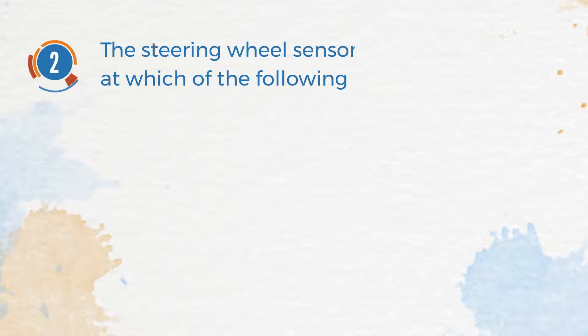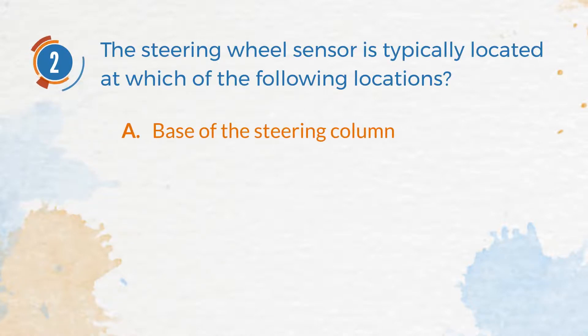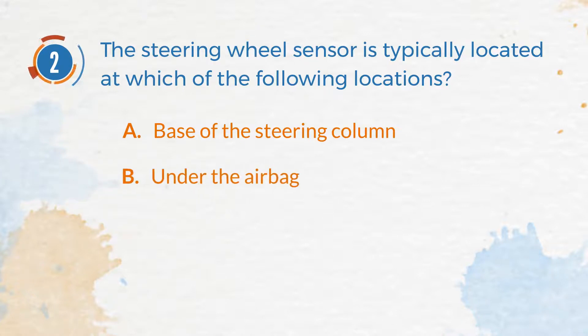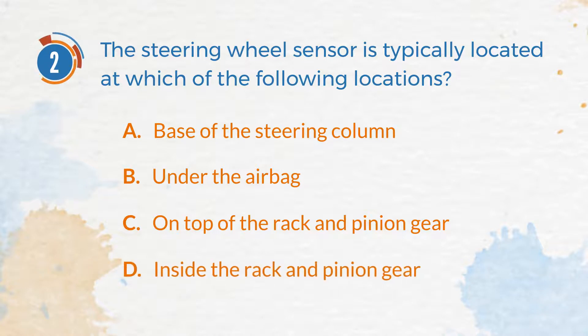Number 2. The steering wheel sensor is typically located at which of the following locations? A. Base of the steering column. B. Under the airbag. C. On top of the rack and pinion gear. D. Inside the rack and pinion gear.